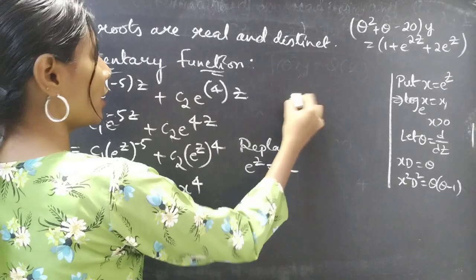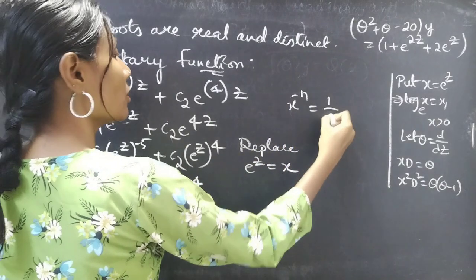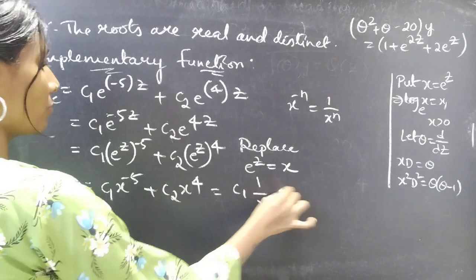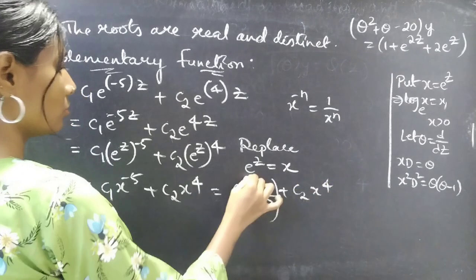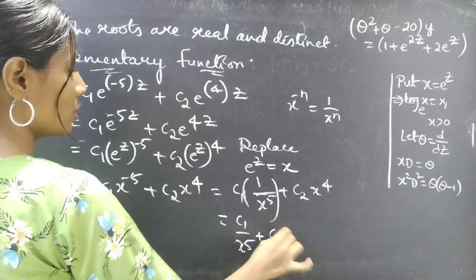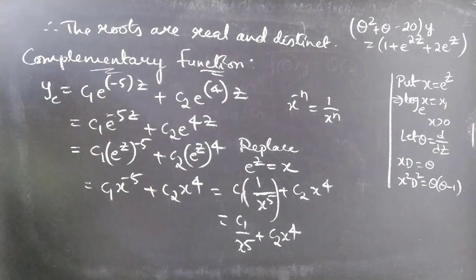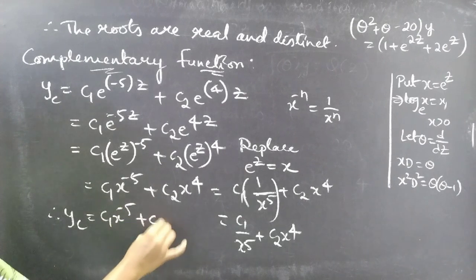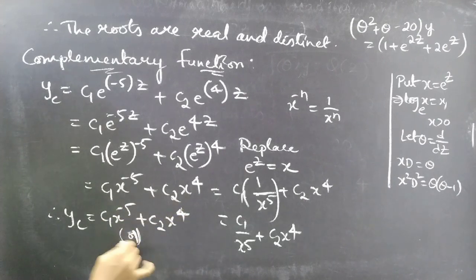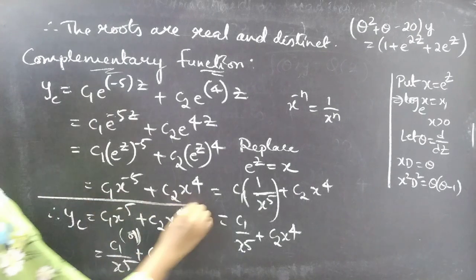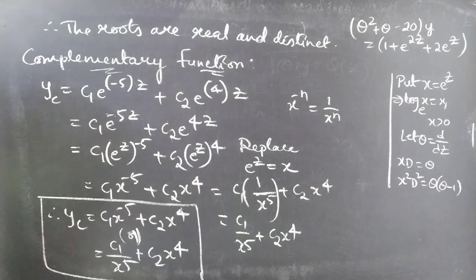Replacing e power z by x, we get c1 times x power minus 5 plus c2 times x power 4. Since x power minus n equals 1 by x power n, we can write this as c1 by x power 5 plus c2 times x power 4. Therefore yc equals c1 x power minus 5 plus c2 x power 4, or equivalently c1 by x power 5 plus c2 x power 4.